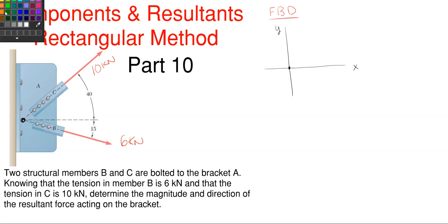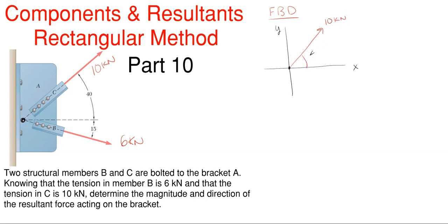What we have here is that we are going to have our 10 kilonewtons of force in the upright direction. It is acting at 40 degrees off the horizontal, and then we have 6 kilonewtons of force acting down and to the right, and that is 15 degrees off the horizontal. That is my completed free body diagram — pretty simplistic.